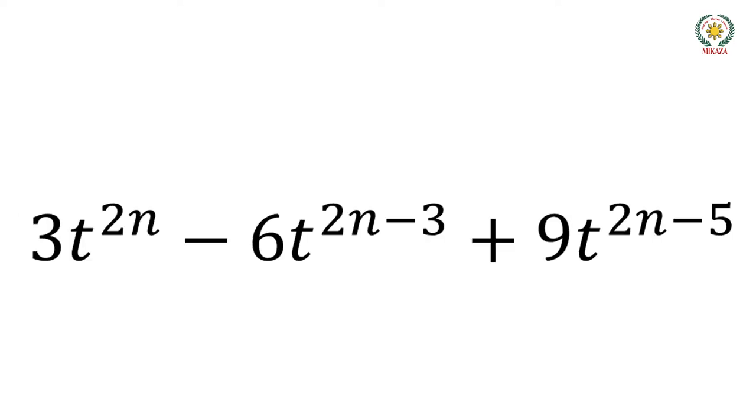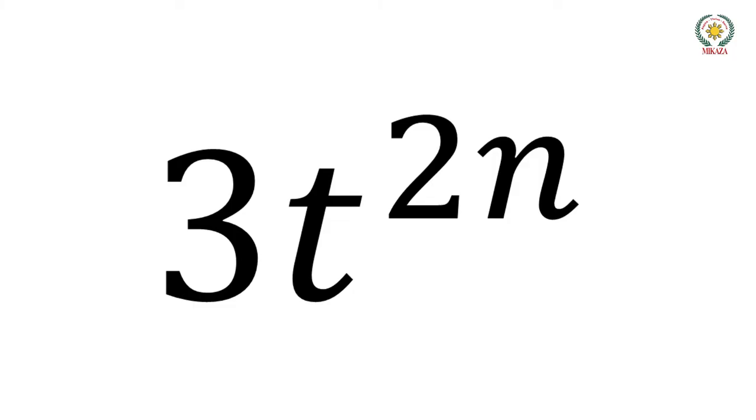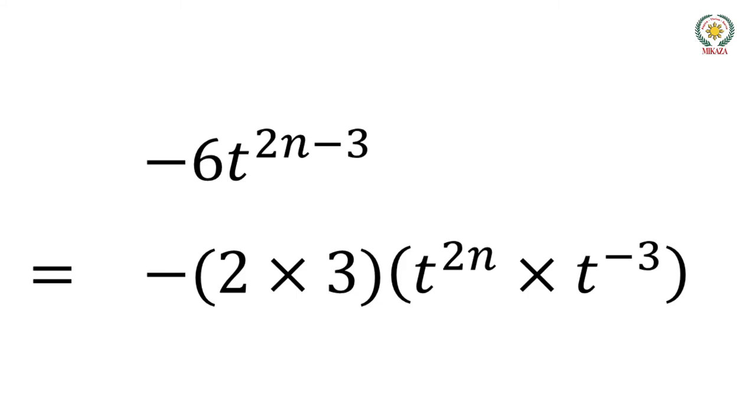Now let's look at this expression: 3t to the power 2n minus 6t to the power 2n minus 3, plus 9t to the power 2n minus 5.